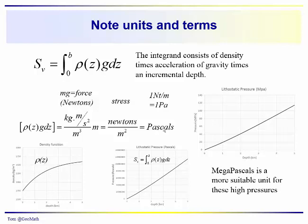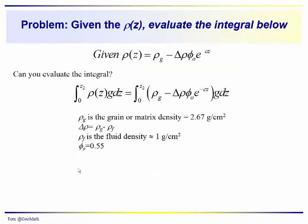And so pascals is a common metric unit for pressure. And you can see over here we have density as a function of depth. Here we have the lithostatic pressure in pascals, really big numbers. So megapascals are often a more convenient unit to represent the changes in lithostatic pressure as a function of depth. And what we're doing, we see the same trend here for this change in density as a function of depth.